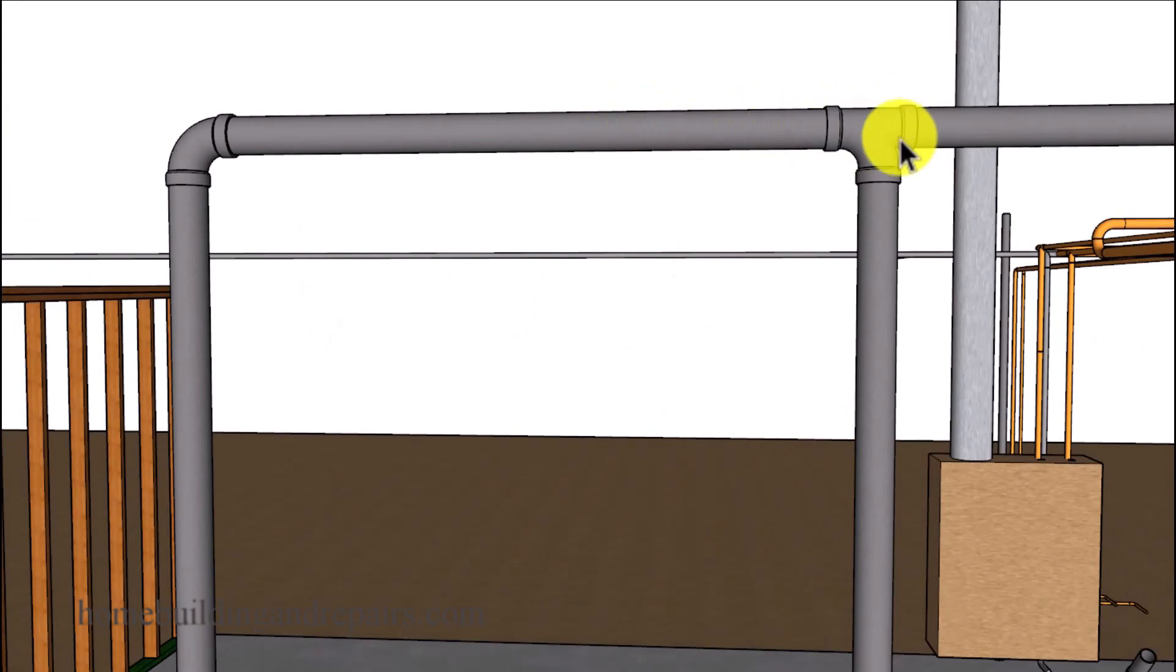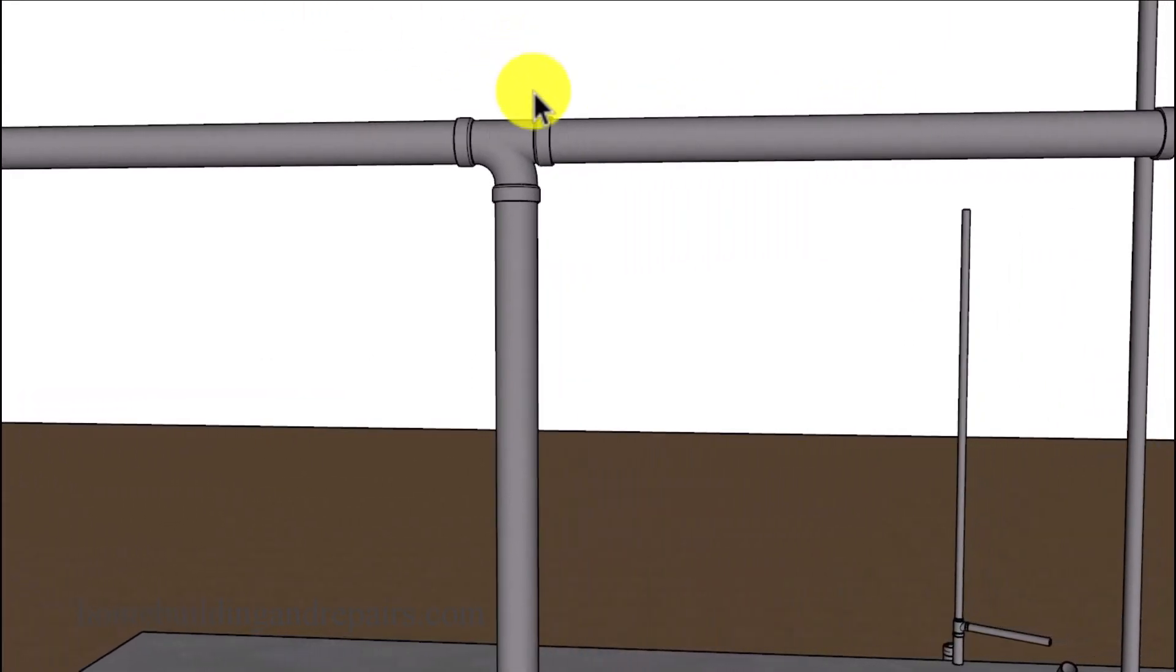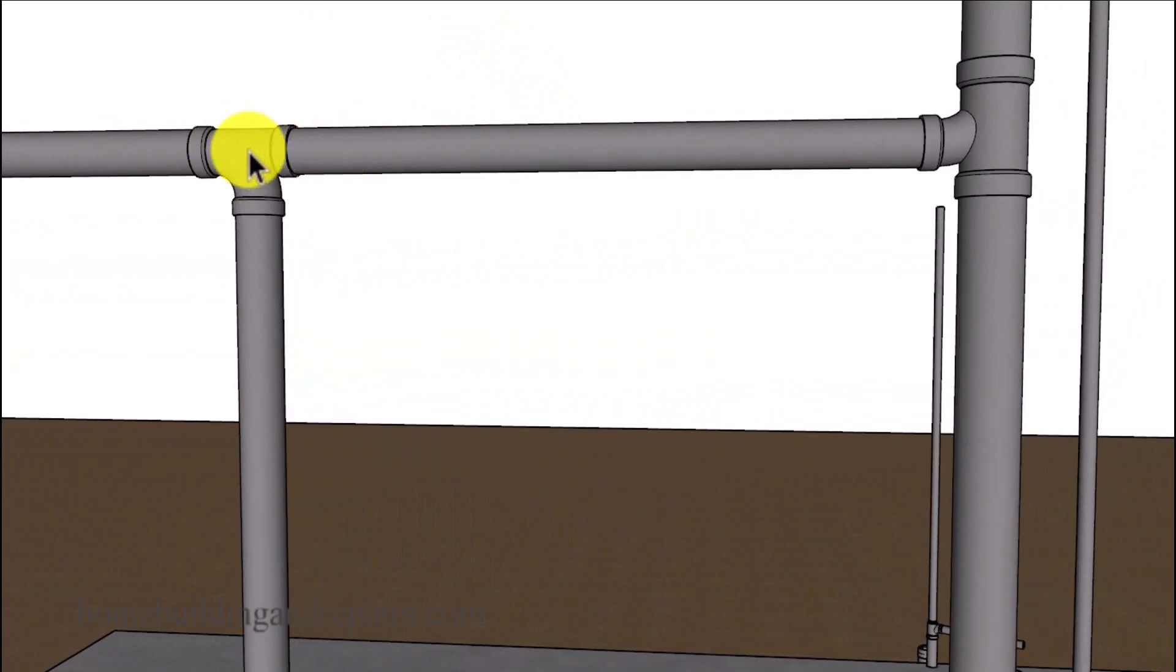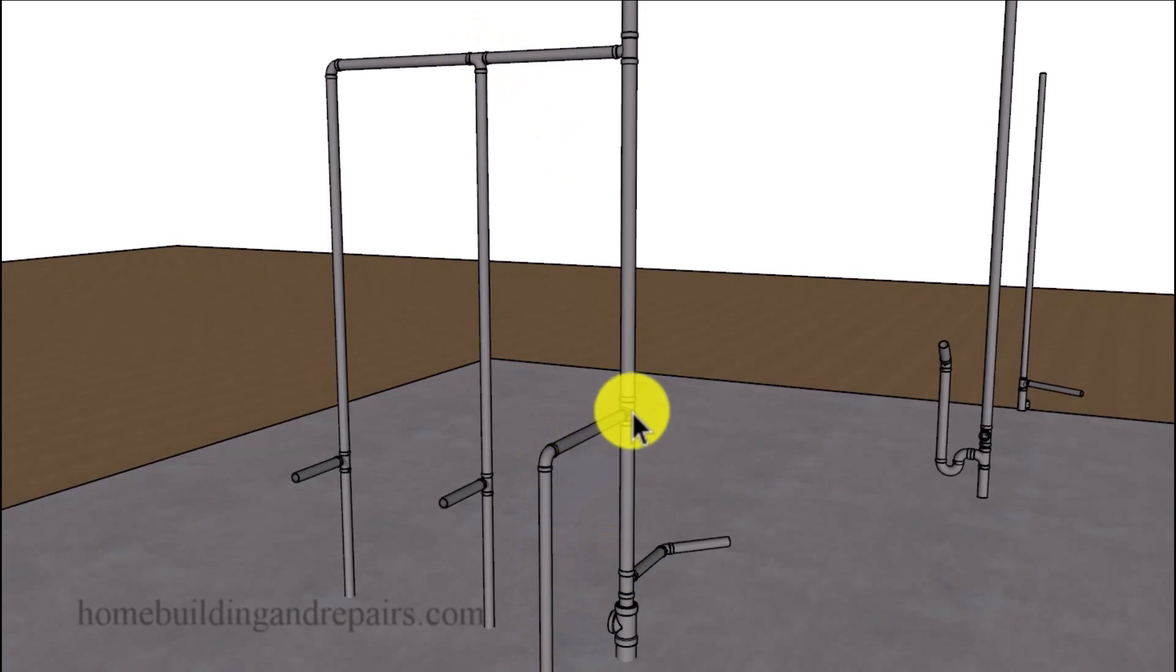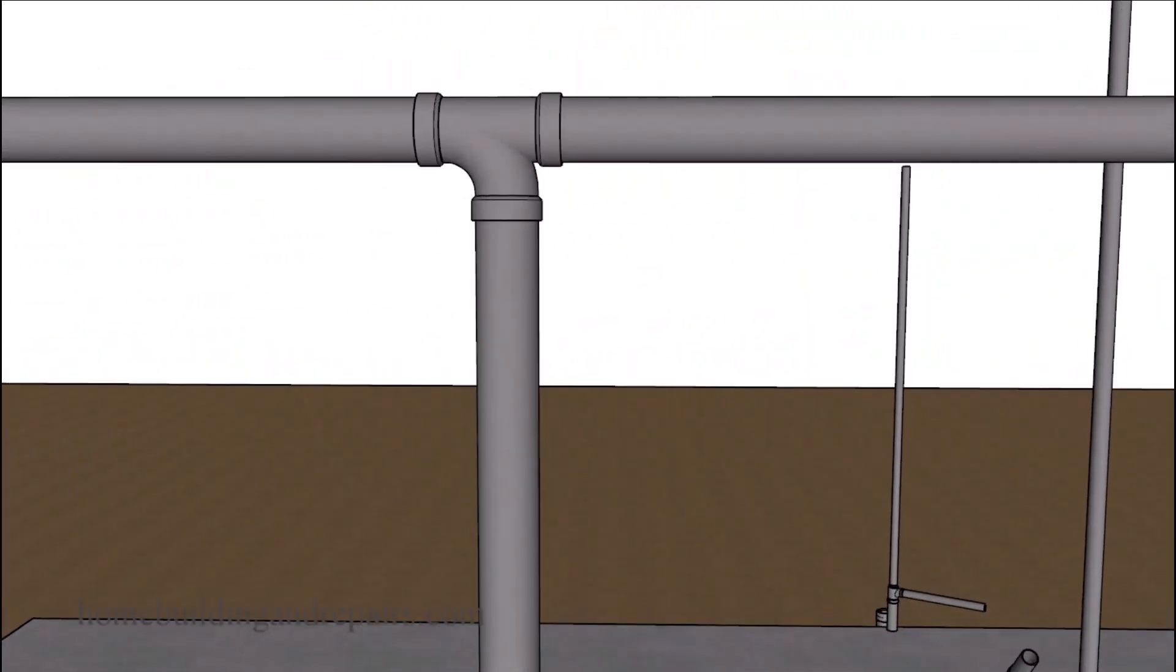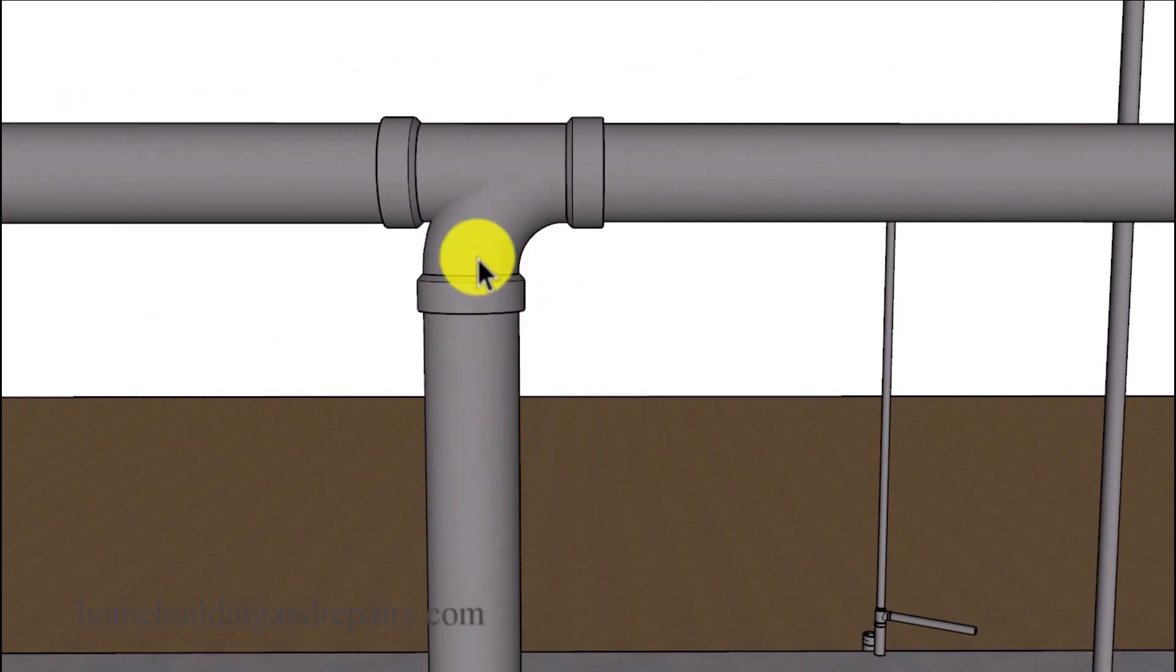And again, I installed this one here backwards just to provide you with an example of something you shouldn't do. And again, we can see here where the airflow is going up. Another view of it there. Airflow going up, out. Except this one here, we're going to have to turn it around so that the airflow goes in this direction here.